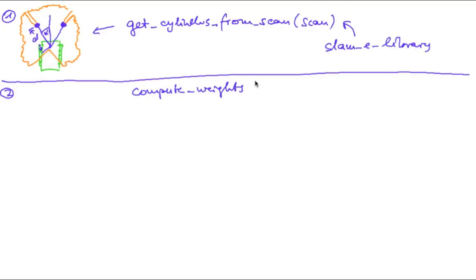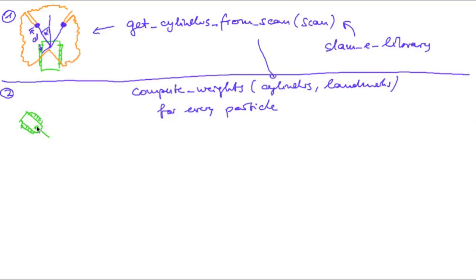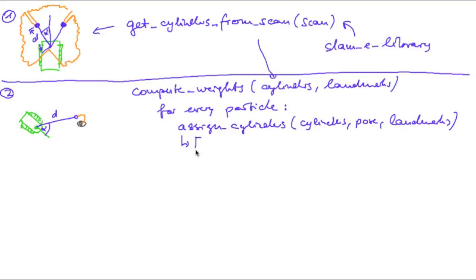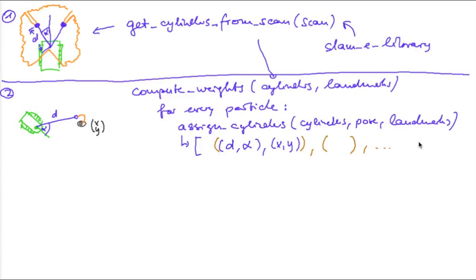In the second step, we need to compute the weights, done in a function you'll have to implement, taking the cylinders and landmarks. This does a loop over all particles. For each particle, we need to assign this measured position of a landmark to the closest landmark in our arena. Fortunately, we programmed something similar earlier for our Kalman filter — the function assignCylinders. It takes the cylinders, pose, and landmarks, and returns a list of assignments containing between 0 and 6 elements, each with measured distance d, measured bearing alpha, and the xy position of the assigned landmark.